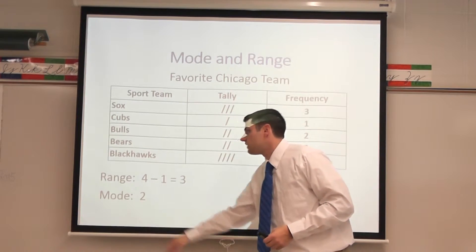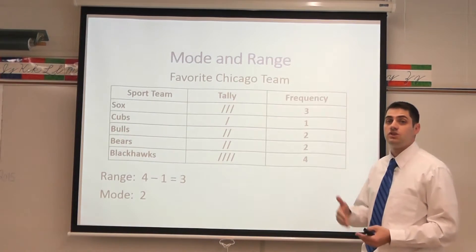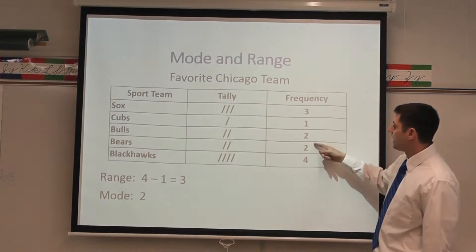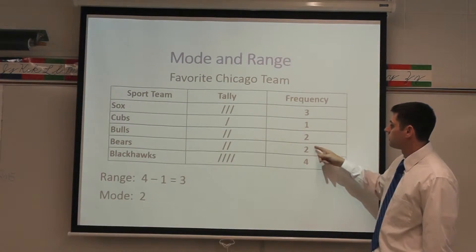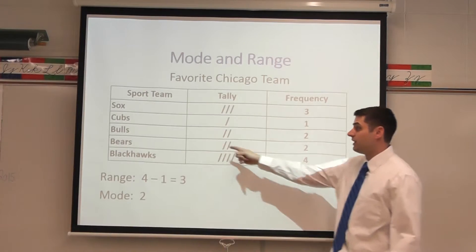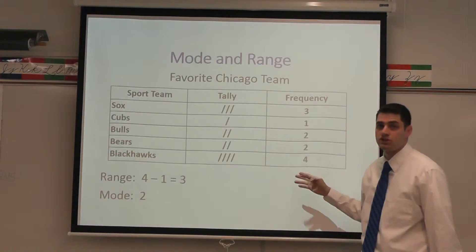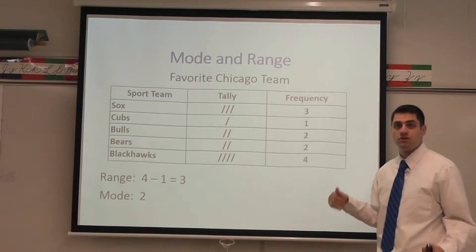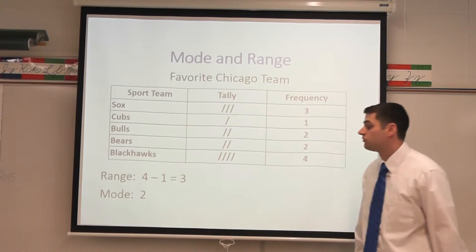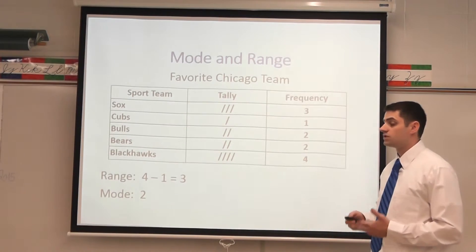Mode is just a fancy word for 'most often' — the data number that you see that happens the most. Looking at this data set, I noticed that two occurred twice, the most popular vote was two. It doesn't mean the Bears and the Bulls are the most popular team because the Blackhawks had more votes, but two was the vote number that occurred most often. So in this question, mode would be two — just finding the one that occurs most frequently.